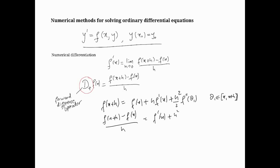This will become h over 2 f''(θ₁). What is this? It's just D₊. So that tells us that D₊f(x) is in fact f'(x) + (h/2)f''(θ₁), which means the error in the forward difference operator is of the order of h.